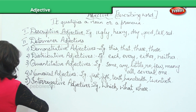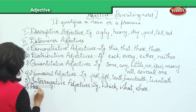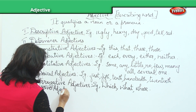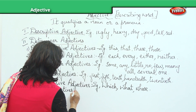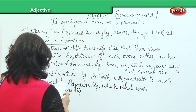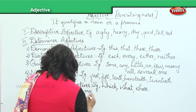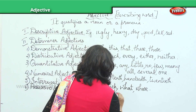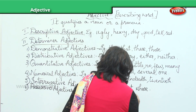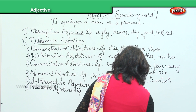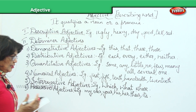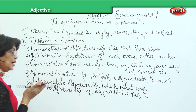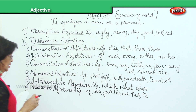Next: possessive adjectives. These are: my, our, your, his, her, theirs, their, and its. All these are possessive adjectives. These are all pronouns which can also be adjectives. For example: 'It is his pen,' 'It is her mother' — here they become possessive adjectives.